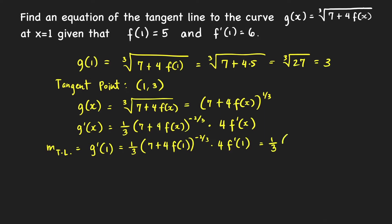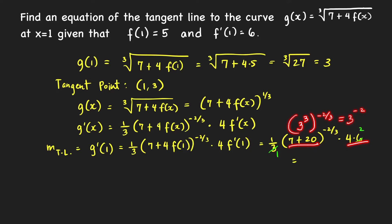Substituting, we have 4 times f prime of 1 which is 6. We can cancel the 3, leaving 2, and 7 plus 20 gives 27, which equals 3 cubed. Raising that to negative two thirds gives 3 raised to negative 2. So the slope is 4 times 2 times 1 over 9, which equals 8 over 9.